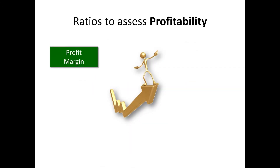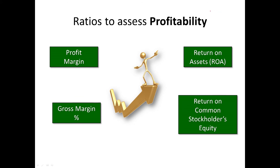Quickly let's talk about ratios that assess profitability. We've talked about these as well, even in this presentation. Again: gross margin percentage, profit margin, ROA — return on assets — and return on stockholders' equity.